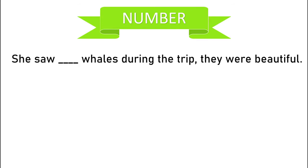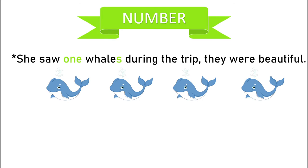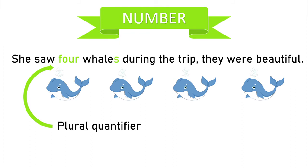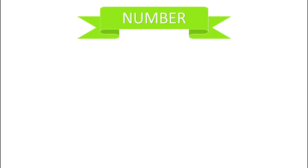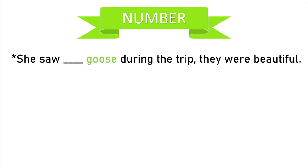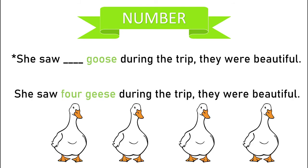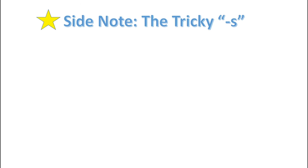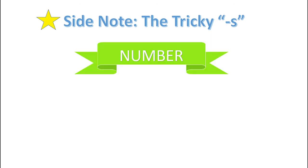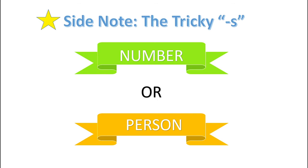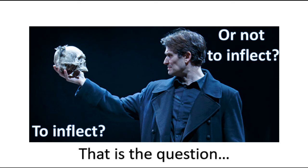The same is true for grammatical number. Consider the sentence 'She saw blank whales during the trip. They were beautiful.' Since the suffix '-s' in 'whales' encodes plural number in nouns, we know she saw more than one, and a plural quantifier is needed to fill the blank. Irregular plural forms are also considered inflected forms — so 'geese' would be the plural inflected form of 'goose.' You may have noticed that the '-s' in English is incredibly frustrating for second language speakers, because depending on context it can encode either number or person, making it very tricky to remember when to inflect and when not to.